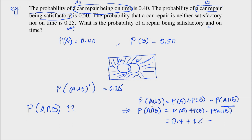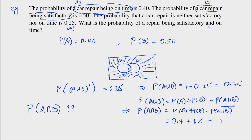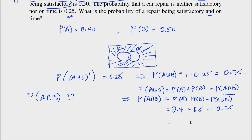We can find the union as follows: since the complement of the union has a probability of 0.25, the union is 1 minus 0.25, which gives 0.75. So we subtract 0.75. Our answer, therefore, is 0.4 plus 0.5 — that's 0.9 — minus 0.75, which gives 0.15.